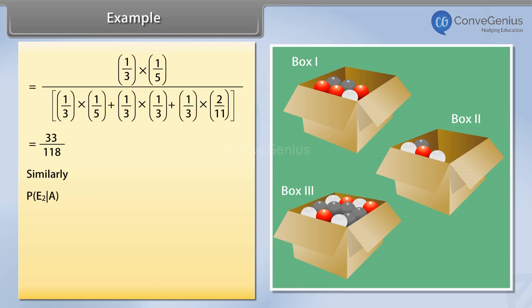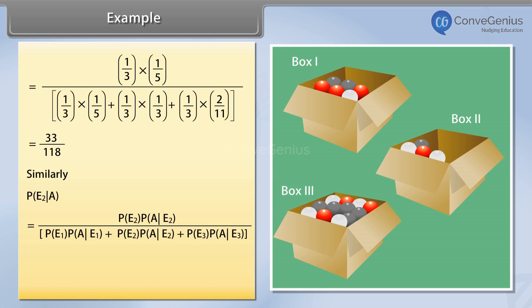Similarly, P(E2|A) = P(E2)·P(A|E2) / [P(E1)·P(A|E1) + P(E2)·P(A|E2) + P(E3)·P(A|E3)] = 55/118.